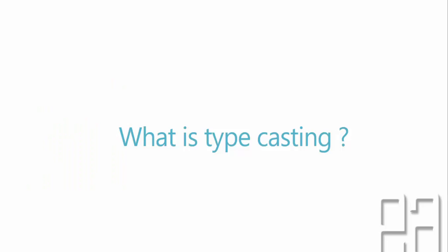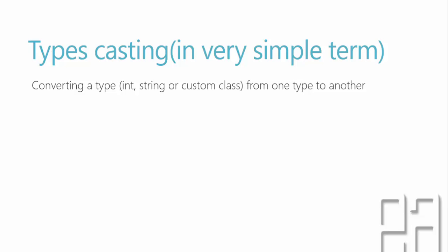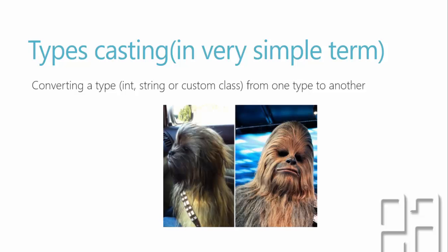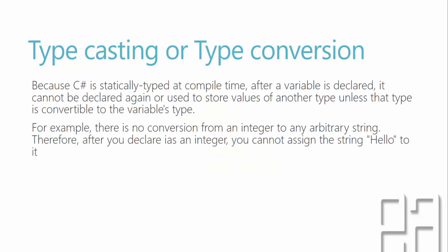So what is typecasting all about? Converting a type from one type to another is what typecasting is — otherwise called type conversion. Because C# is statically typed at compile time, after a variable is declared it cannot be declared again or used to store values of another type unless that type is convertible to the variable's type.